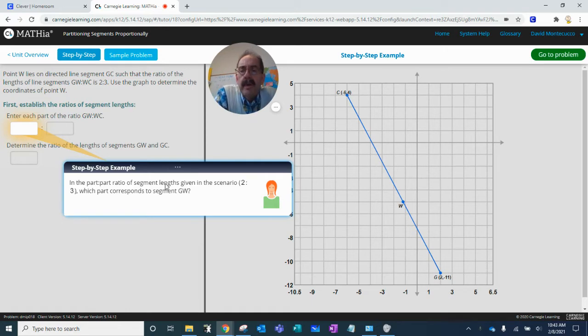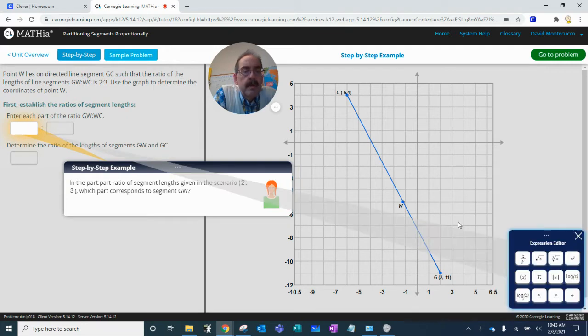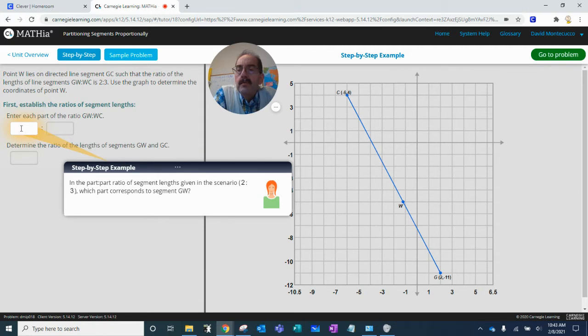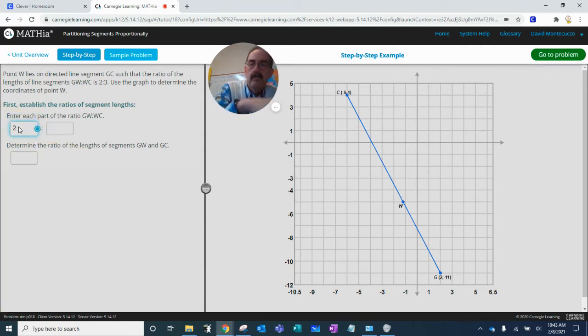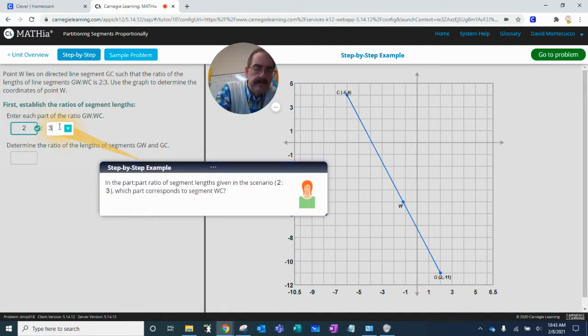In the part ratio scenario two, which part can confirm response to GW? In the part, two-thirds. Two. Three.